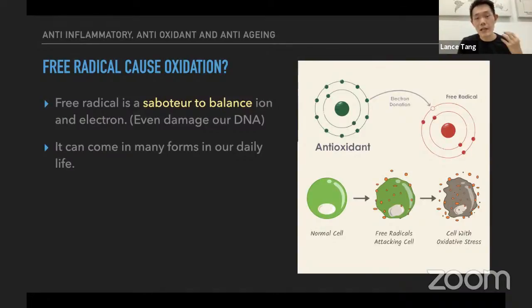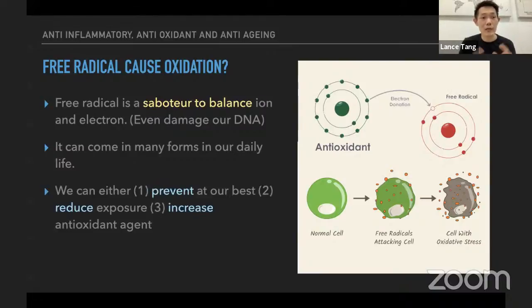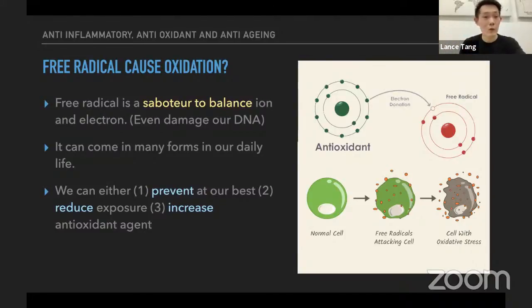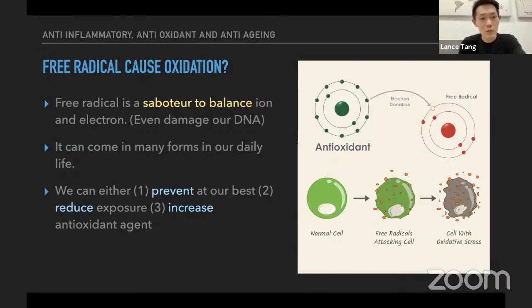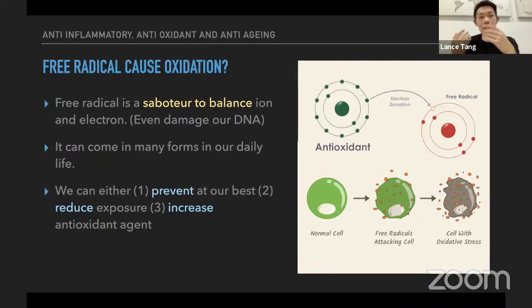Free radicals can come in many forms in our daily life — just now I mentioned blue light as a common one, but there are many more. Even indoors, we have a lot of chemicals emitted by our wall paint, furniture, and cabinets. These things become free radicals and somehow enter our body through our breathing system, through injuries, through wound openings, and so on.